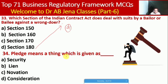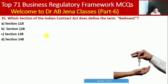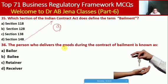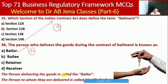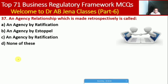Next MCQ: pledge means a thing which is given as what? Whether security, lien, novation, or consideration. Here A is the right option — pledge means a thing given as security. Next MCQ: which section of the Indian Contract Act defines the term bailor? Whether Section 118, 128, 138, or 148. Here D is the right option — Section 148.